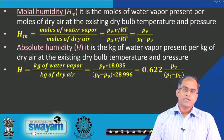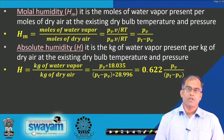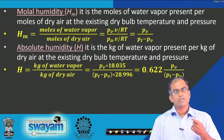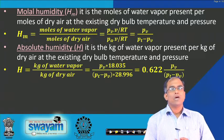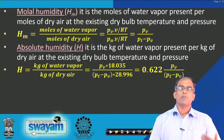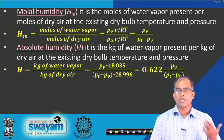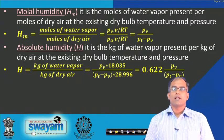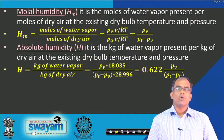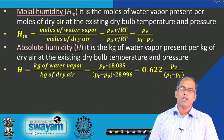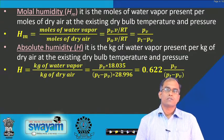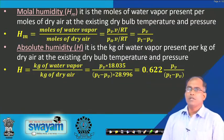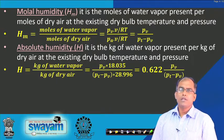Absolute humidity H is defined similarly to molar humidity, but expressed in kg of water vapour per kg of dry air. Converting moles to mass by multiplying by molecular weights (18.035 for water vapour and 28.996 for air) gives a factor of 0.622. Therefore, absolute humidity H = 0.622 × H_m = 0.622 × P_v / (P_T − P_v).